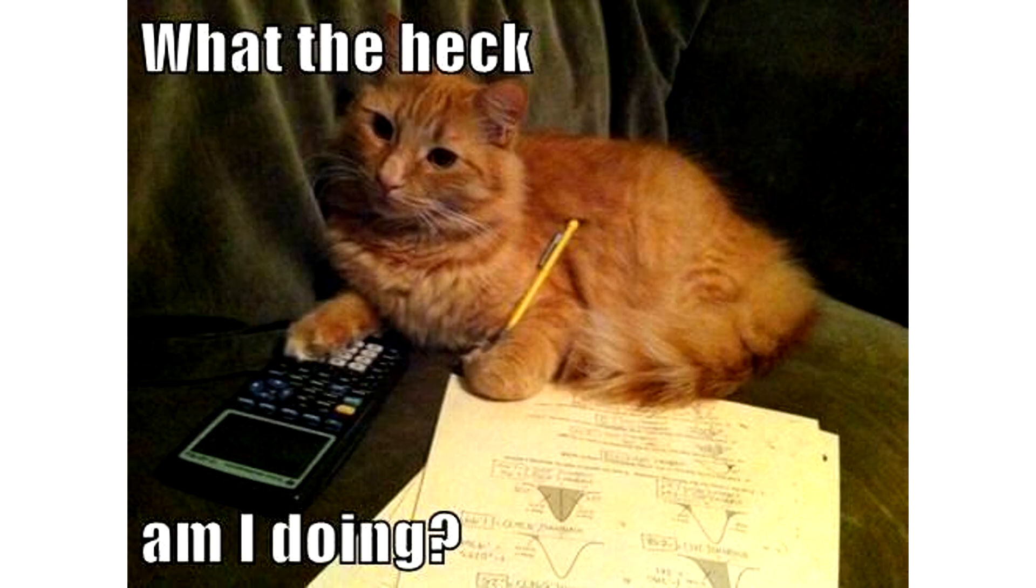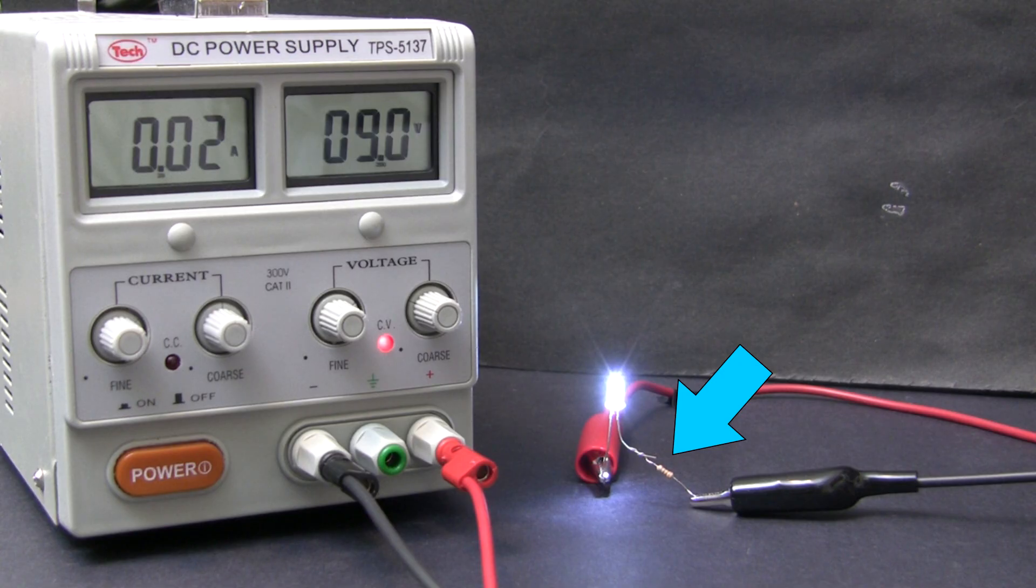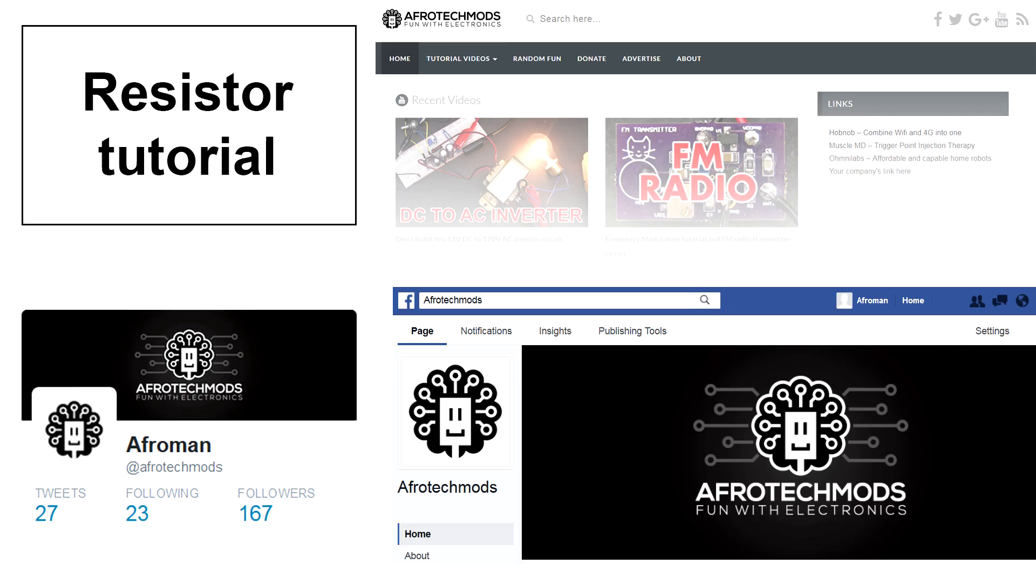So what do you do if you want to limit current and you don't have a fancy adjustable power supply? You can use a thing called a resistor, and these literally cost a few pennies. I'll talk more about resistors and resistance in my next video which will be linked here. In the meantime, leave a thumbs up, check out the website, and follow me on Twitter and Facebook.